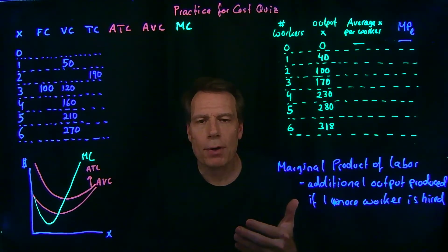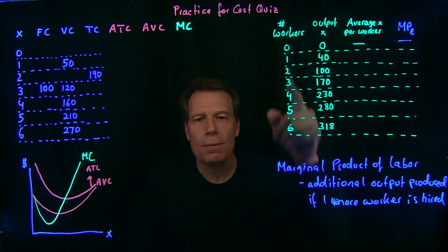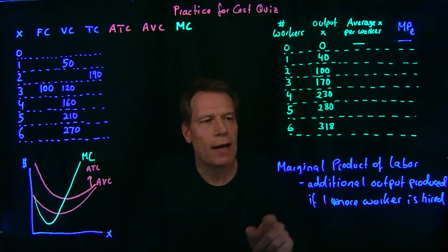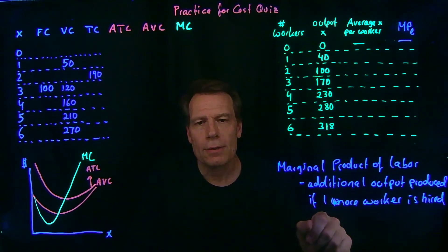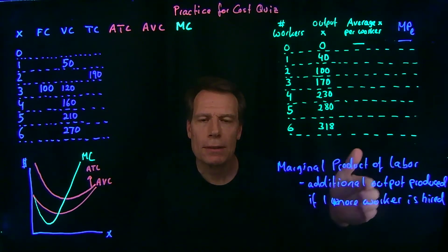Oftentimes, we define the marginal product of labor in terms of worker hours. But in this case, in the context of this table, we just have the number of workers, so we'll define the marginal product of labor as the additional output that you're going to produce when you hire one additional worker.